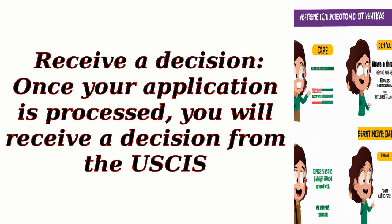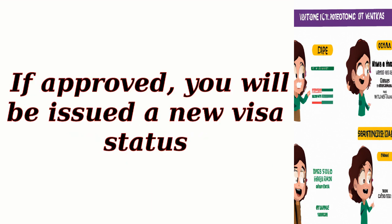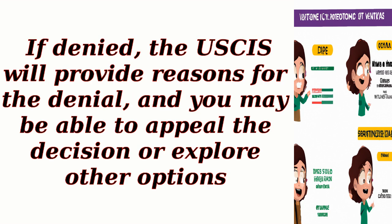Step 11: Receive a decision. Once your application is processed, you will receive a decision from the USCIS. If approved, you will be issued a new visa status. If denied, the USCIS will provide reasons for the denial, and you may be able to appeal the decision or explore other options.